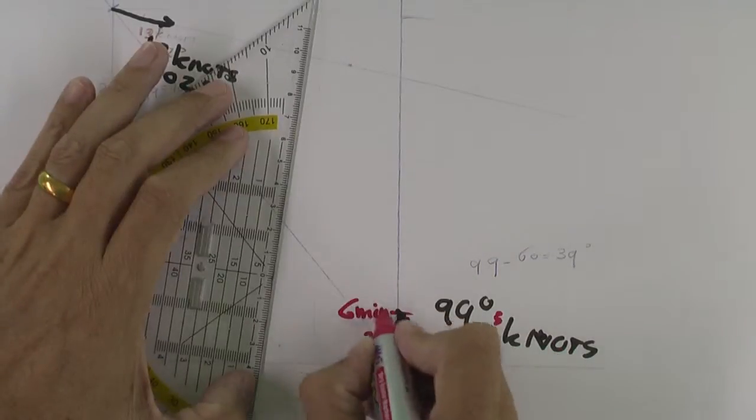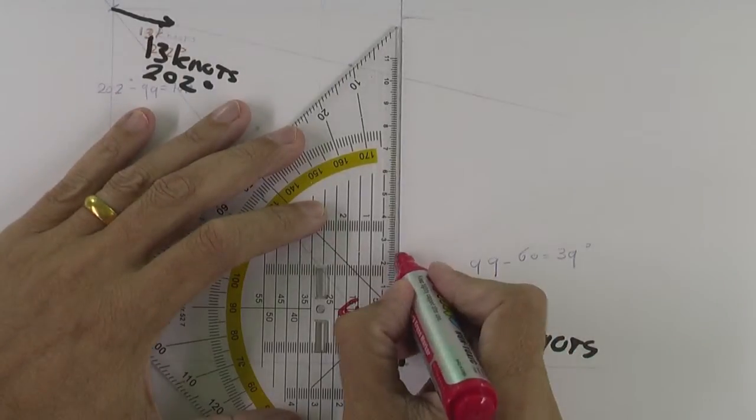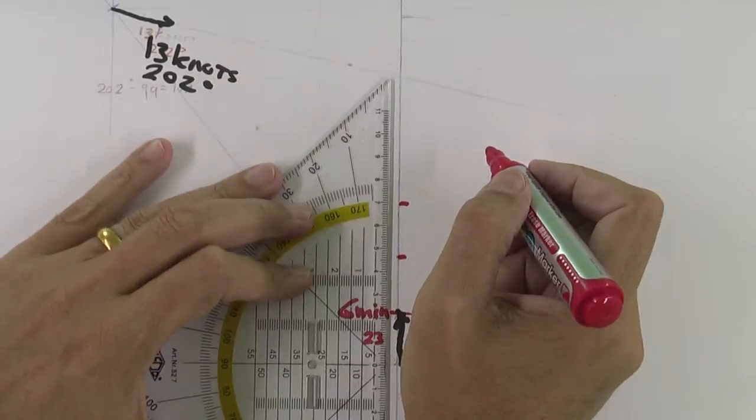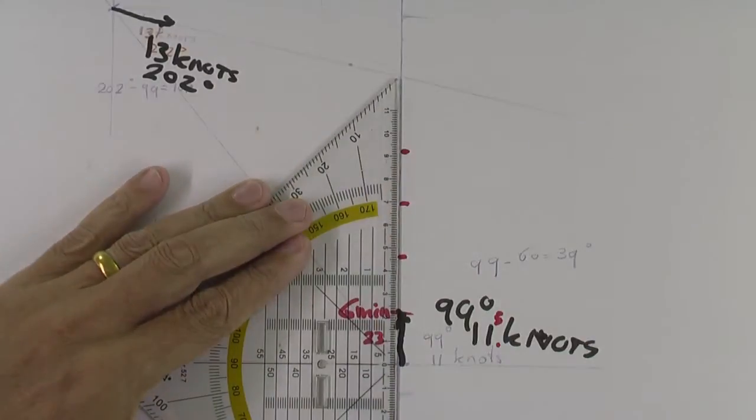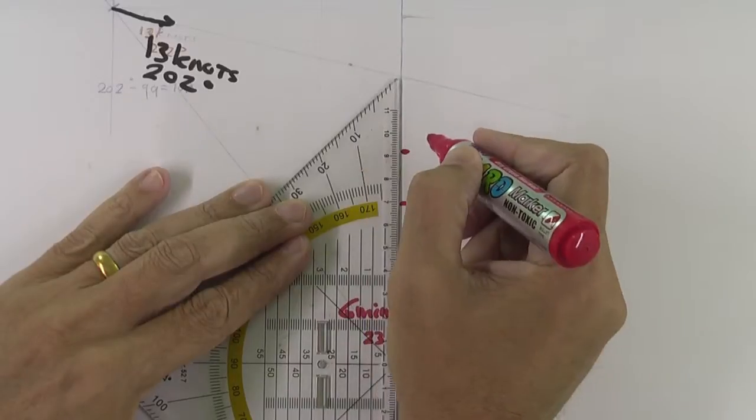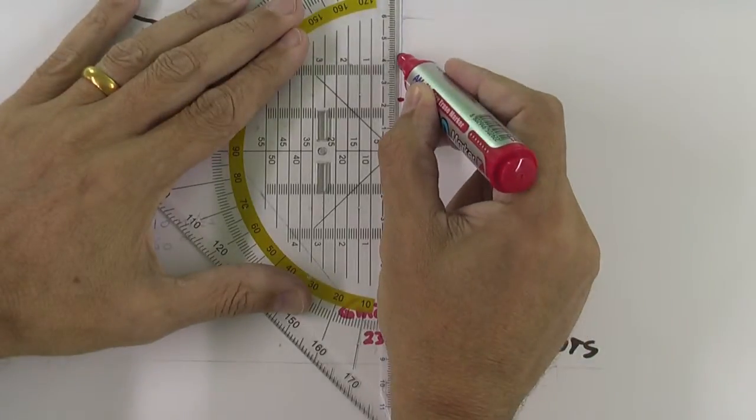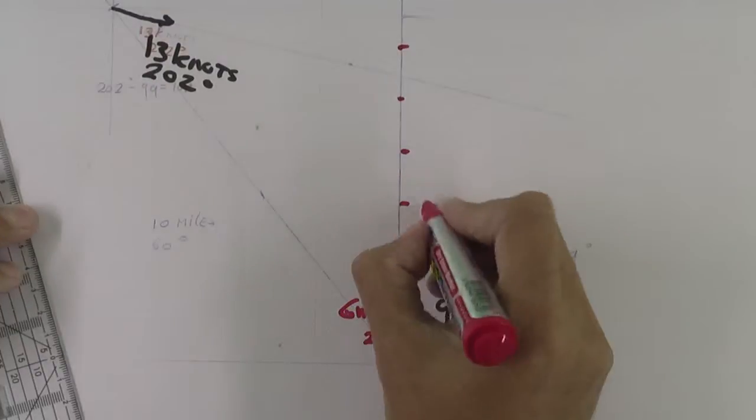11.5 knots is just 23 millimeters, sorry. We use the 6 minutes calculation because this is easy, error free. This is just one tenth of your speed.